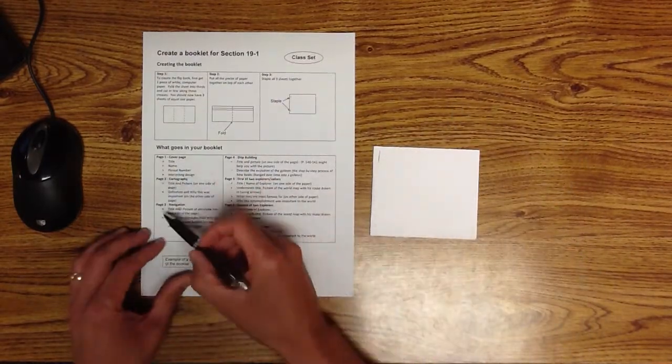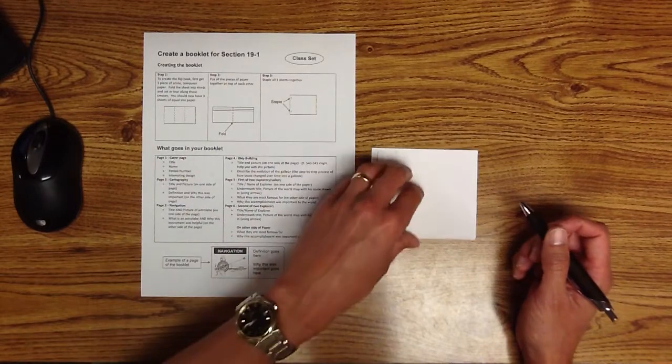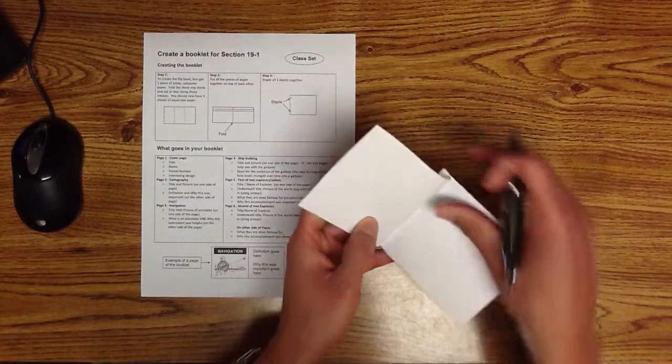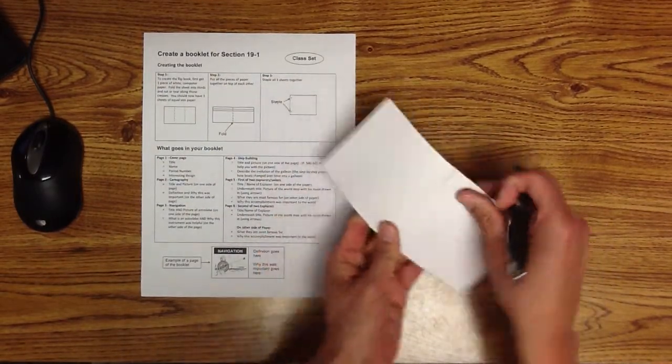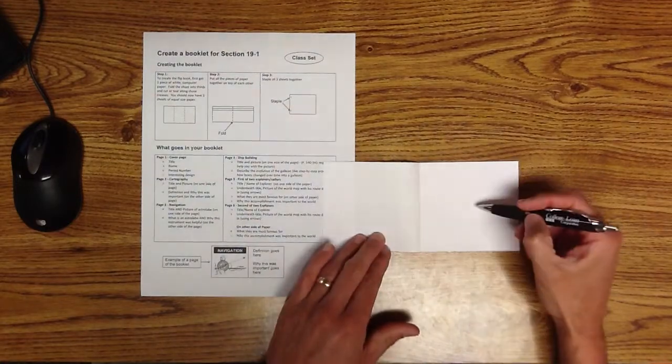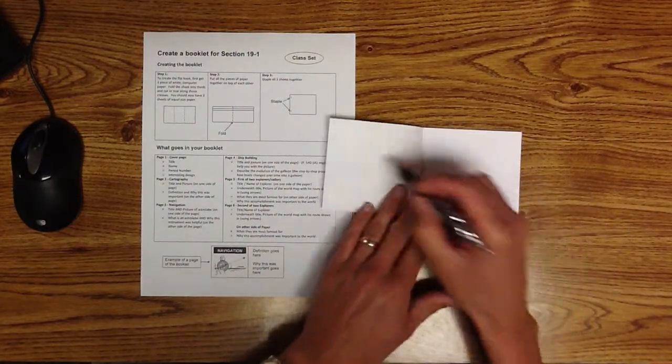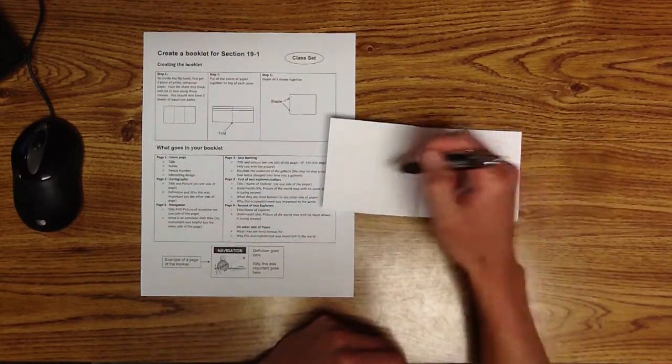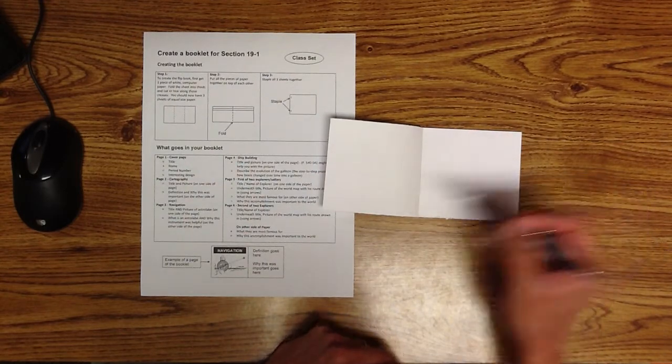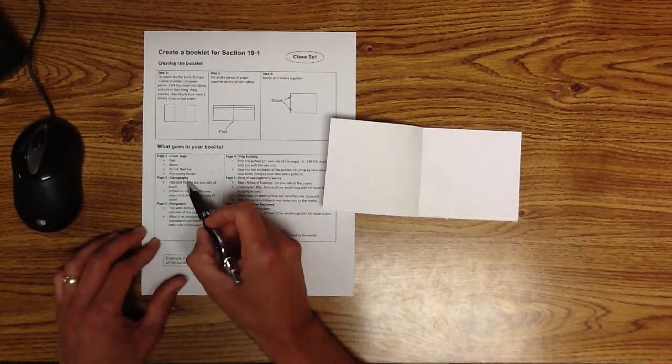Okay, now page two, page three, all the rest of the pages works a little bit different. You would think, okay, I open it up and here's page two, here's page three. That's not how it works. This whole thing is page two. Okay, and so it says page two is about cartography.